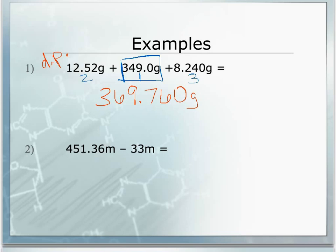Therefore, we are going to record our final answer with one decimal place: 369. But looking at the seven next to it, the six would round up. So our final answer is 369.8 grams.